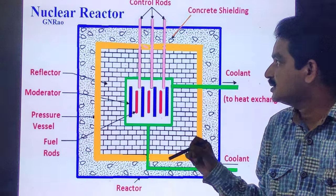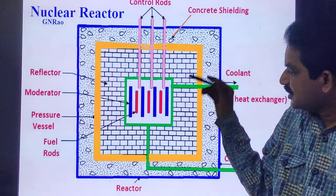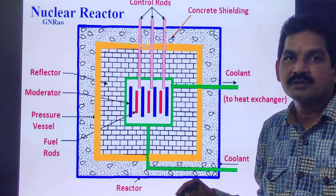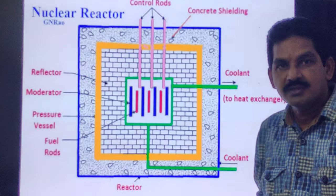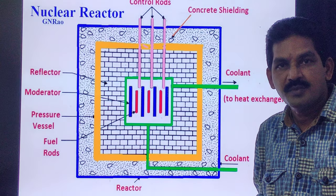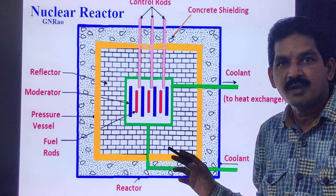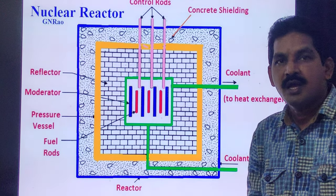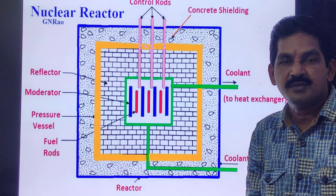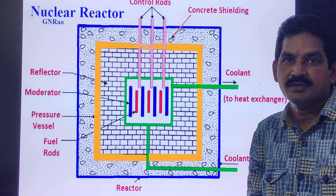The upper guide structure assembly also guides and protects the control rod assemblies and in-core instrumentation. A nuclear reactor may be regarded as a substitute for the boiler fire box of a steam power plant. Heat is produced in the reactor due to nuclear fission of the fuel uranium-235.